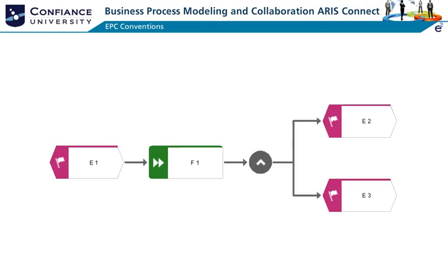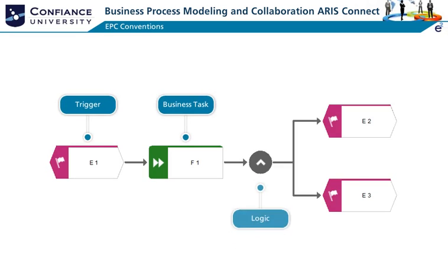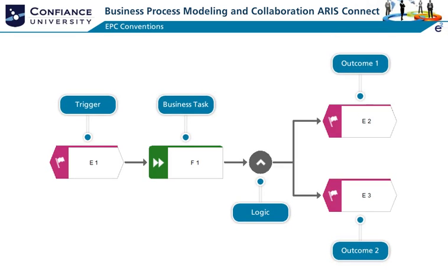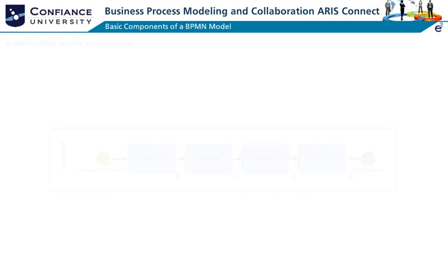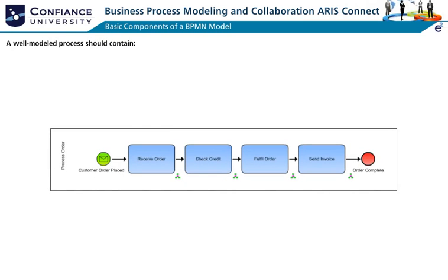A process is defined as a set of logically grouped activities that use resources to transform inputs to outputs in order to fulfill the needs of an organization or parts of it. EPC models can either be built from left to right or top to bottom, and consist of events — business triggers and outcomes — functions, business tasks, and logic operators that control the flow of the process. A well modeled process should contain a start event or trigger, activities, connectors, and an end event with end state.